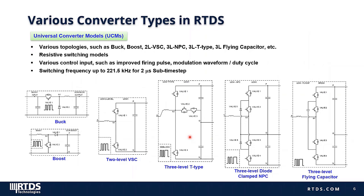In our simulator, there are various converter types supporting power electronics simulations. The universal converter models have benefits for high-frequency converters, as Katie introduced. Converter types using UCM technology include: buck converter, boost converter, two-level voltage source converter, three-level NPC, three-level flying capacitor, and three-level T-type converters. We also developed a dual-active bridge model, which has been fully tested and will be released soon. All these UCMs support modulation waveform or duty cycle input for average modeling, improved firing pulse for relatively large time steps, and regular firing pulse. All these topologies are resistive switching models. For a time step of 2 microseconds, the switching frequency can be up to 221.5 kHz.